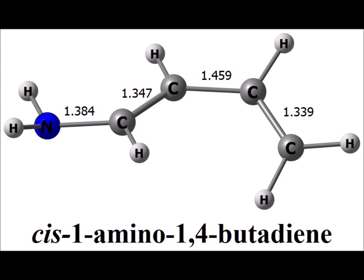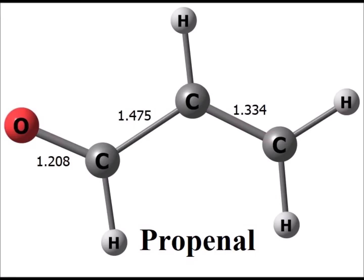Here is the geometry-optimized structure of the cis-1-amino-1,4-butadiene, the diene for the first case. Here is the optimized structure of propenal, the dienophile.